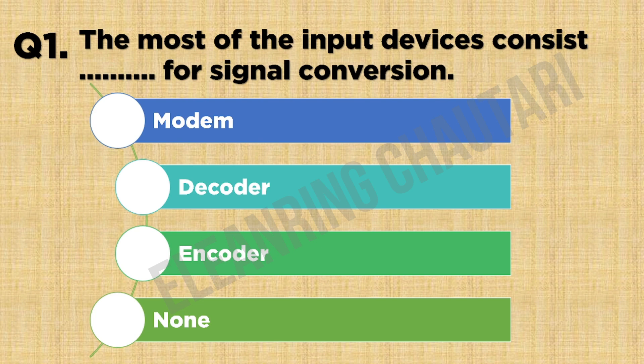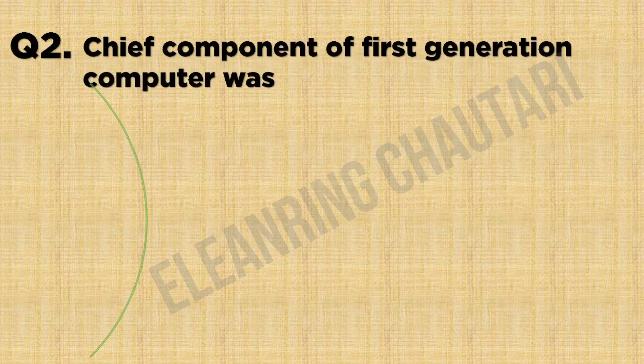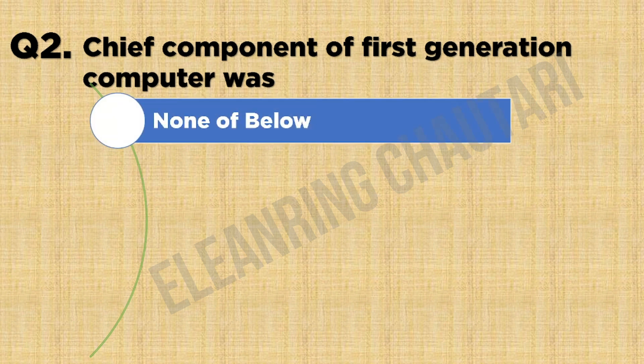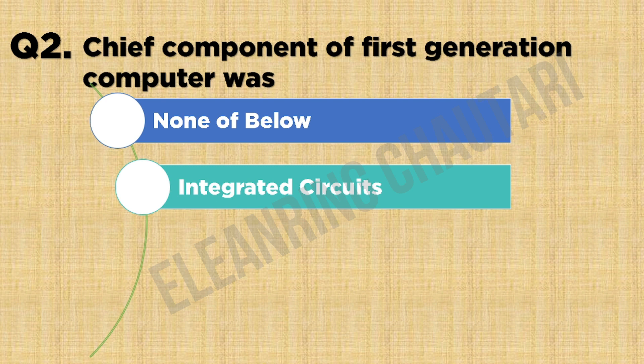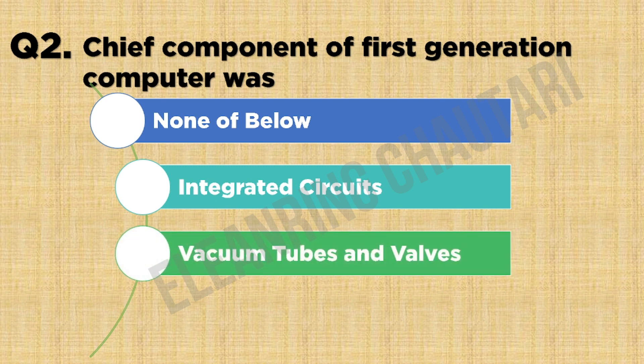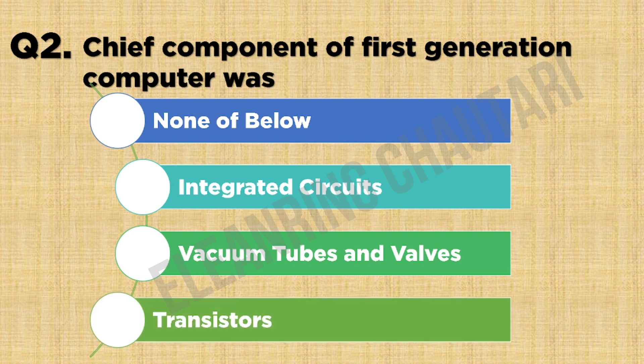Question 2: Component of first-generation computer. Option A: Vacuum tubes and valves. Option B: Integrated circuits. Option C: Back-end tubes and valves. Option D: Transistors.